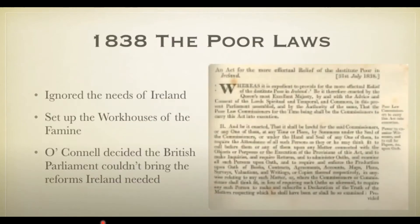In today's class we're going to look at how Daniel O'Connell set out to abolish the Act of Union, which took power from College Green in Dublin — the Irish Parliament — and brought that power over to Westminster in England. Daniel O'Connell's life ambition was to abolish these laws, but this wasn't successful, and we're going to watch how this happened today.